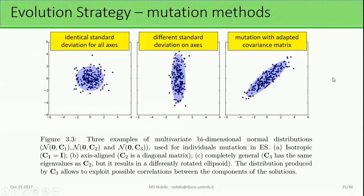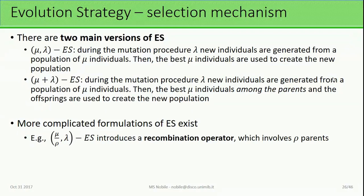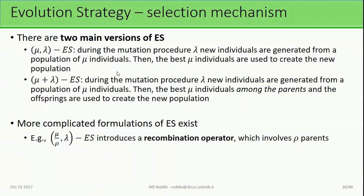This is exactly what covariance matrix adaptation evolution strategy (CMA-ES) does. There are two main selection variants: mu-comma-lambda, where lambda new individuals are created from mu parents and the best mu among lambda are selected for the new population; and mu-plus-lambda, where an intermediate population combining parents and offspring is formed, and mu individuals are selected from that combined pool.